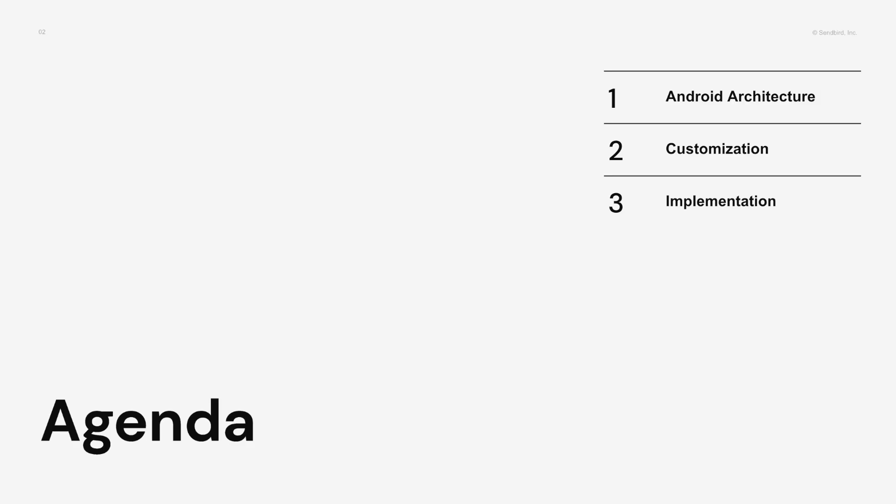First, I'm going to explain the architecture of Android. Next, I will show you how to customize the UIKit components as shown in the architecture. Finally, using an actual customer request, I will show you how to implement our UIKit version 3.